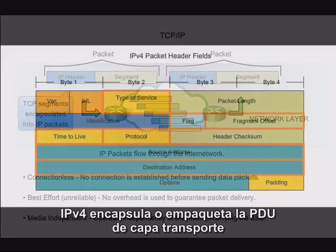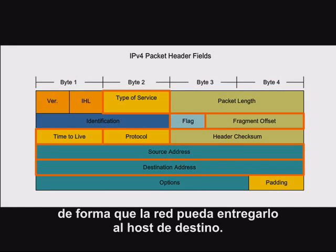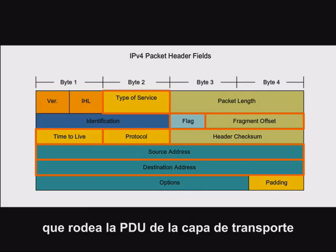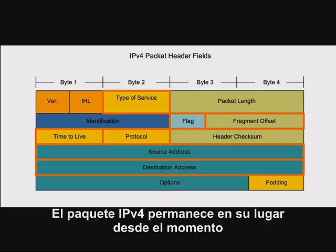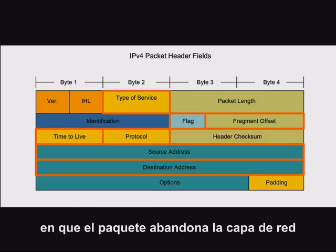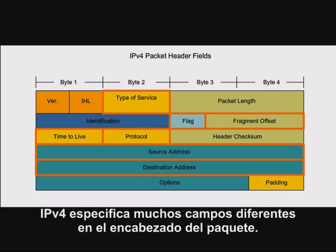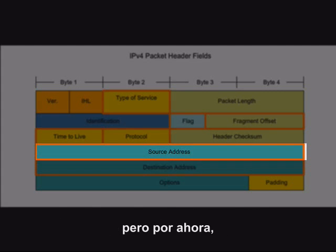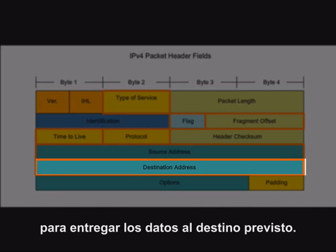IPv4 encapsulates or packages the transport layer PDU into the Layer 3 IP packet so the network can deliver it to the destination host. You can think of the IP packet as an envelope that surrounds the transport layer PDU as it travels through the network. The IPv4 packet remains in place from the time the packet leaves the network layer of the originating host until it arrives at the network layer of the destination host. IPv4 specifies many different fields in the packet header, but note that the source address and destination address fields are crucial to delivering the data to the intended destination.